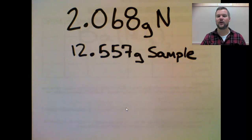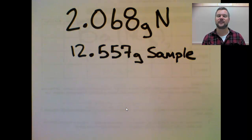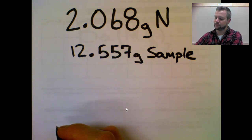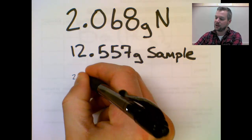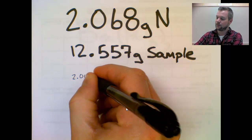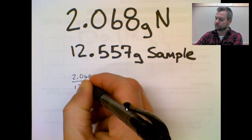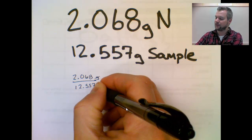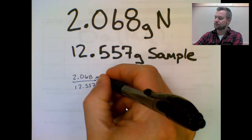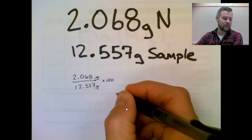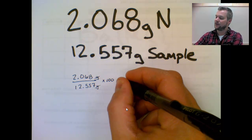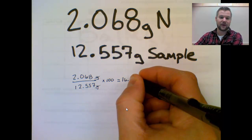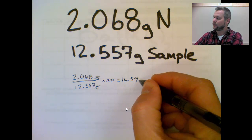A problem looks like this. What if I wanted to know the mass of nitrogen in a sample? So I have a 12.557 gram sample, and I know that 2.068 grams of it happen to be nitrogen. So part divided by whole, just like we were doing for the theoretical percentage. Notice these are both grams, so they cross out, times 100 to make it into a percentage. If you do this, it ends up rounding to 16.5% nitrogen.